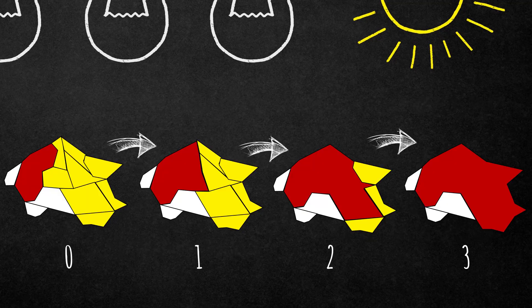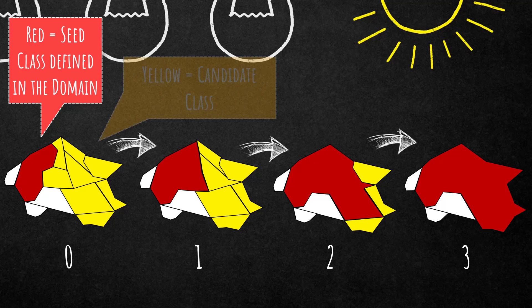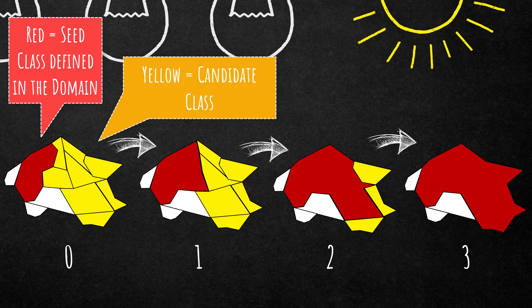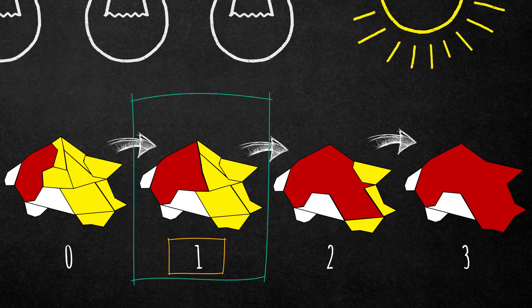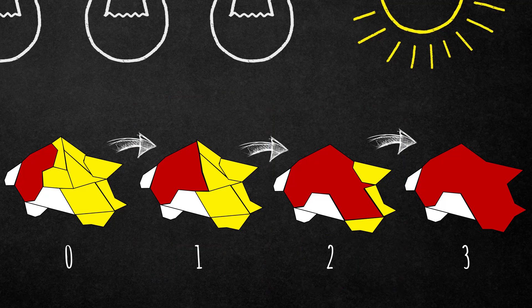Let's have a look at the next slide where I put these concepts into graphics. Let's assume red is our seed class. We start on the left-hand side with zero executions of the grow region algorithm, and we want to grow into the yellow class. Red is our seed class defined in the domain, and yellow is our candidate class defined in the algorithm parameters. After executing it once, the seed object grows into candidate objects. After two times it grows again, and after three times all yellow image objects are now classified as seed, and you also see that it merges these image objects together.